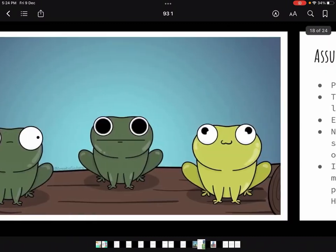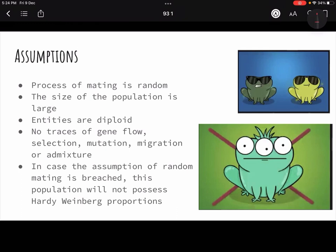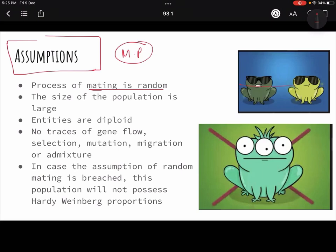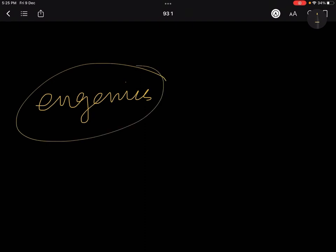So moving to the next slide, the assumptions. This is something similar to what we had read in the Mendelian population also. So we were saying that mating has to be random. That means if we are creating any kind of a selection process for the mating, then maybe in the next topics we are going to study eugenics.